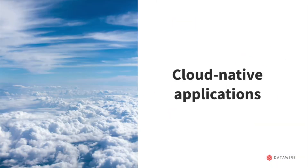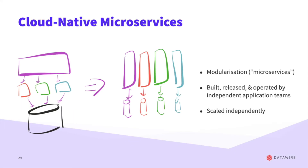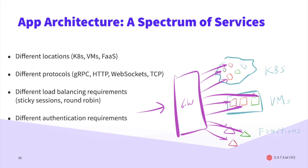Cloud-native applications — that's what we're here for at KubeCon. A lot of us are focusing on modularisation. Our latest incarnation of modularisation is microservices: built, released, and operated by independent teams. We can split up our application, work independently, release independently, and scale independently. As microservices have become popular, there's been a rise of interest around container technology and Kubernetes. It does create challenges with matching user requests to back-end services, with apps running in Kubernetes, in VMs, or in Function as a Service.